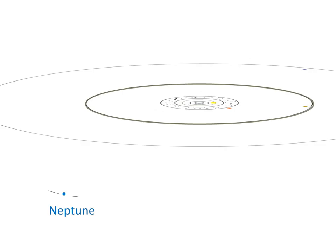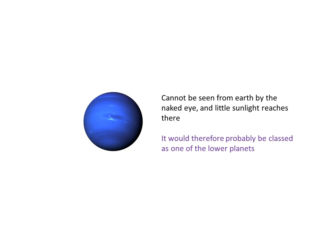However, somebody might turn around and say, well, what about poor Neptune? That exists, does it not? Did the ancient Vedic Brahminas know about Neptune? Well, it cannot be seen from Earth by the naked eye, and little sunlight reaches there. So, although it's never mentioned, it would probably therefore be classed as one of the lower planets. We'll learn more about lower planets in part three of this presentation.